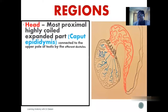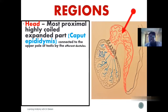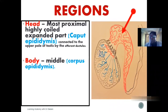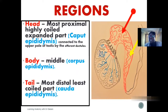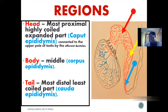The epididymis is divided into three regions. We have the head of the epididymis, also referred to as the caput epididymis. This region is the most superior part, connected to the efferent ductus, and is the most highly coiled region. Distal to the head is the body, which is the middle part of the epididymis. It is less coiled when compared to the head. Distal to the body, we have the tail, which is the most distal and least coiled part. The tail region can also be referred to as the cauda epididymis, meaning the most inferior part.